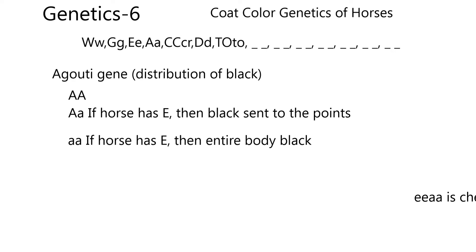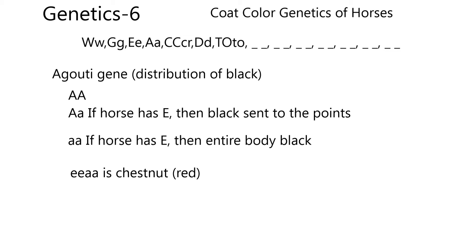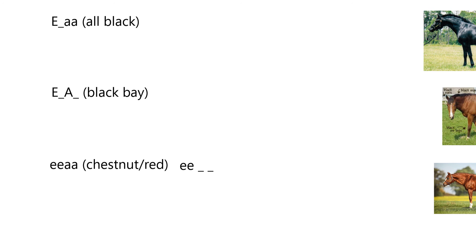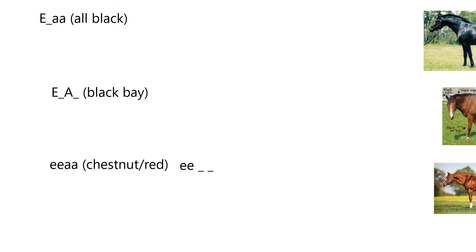If the genotype is e/e and a/a, the horse is chestnut — there's no black at all. Black requires at least one large E. So with e/e and a/a you get a red horse. Now let me show some examples of how the extension gene interacts with the agouti gene.